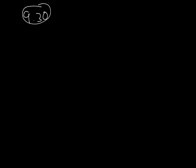I also received a question on problem number 30. In this problem, we have a Jupiter-sized planet that orbits the star 55 Cancri with an orbital radius of 8.2 times 10 to the 11 meters. The orbital period of this planet is 13 years, so T equals 13 years.